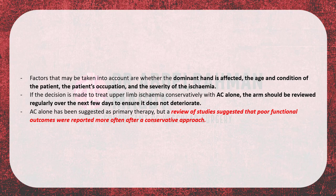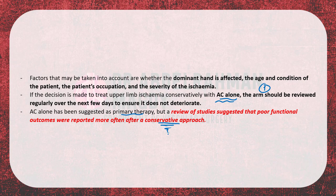Factors to take into account include whether the dominant hand is affected, the age and condition of the patient, the patient's occupation, and the severity of ischemia. If the decision is made to treat conservatively with anticoagulation alone, the arm should be reviewed regularly over the next few days to ensure it does not deteriorate. Anticoagulation has been suggested as primary therapy, but a review of studies indicated poor functional outcomes were reported more often after a conservative approach. The patient must also be advised of the risk of forearm claudication over time.